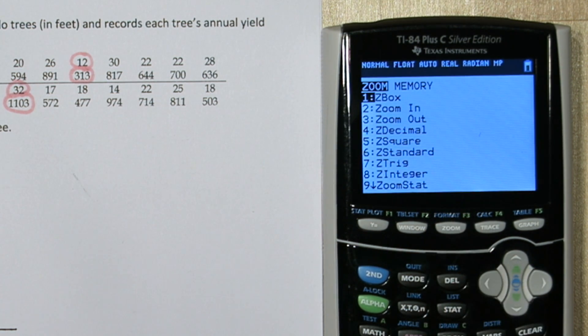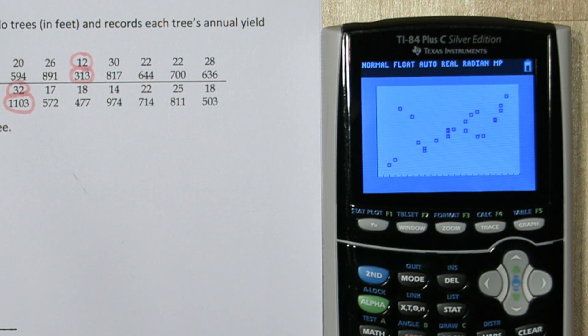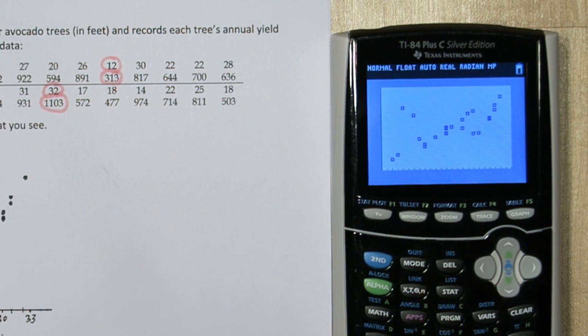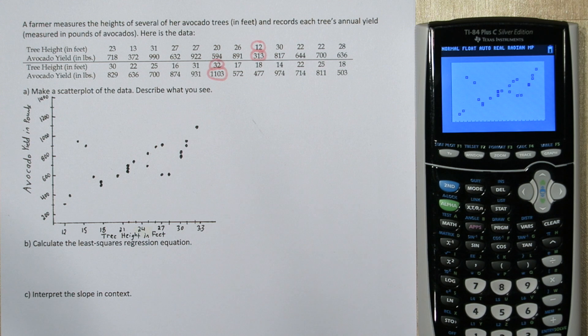Now if you press ZOOM and 9, here's our scatter plot. So if we compare the two of them, they look pretty similar. Now if you have to copy down a scatter plot, I still suggest typing it into the calculator first, and then just transferring over the points. It's much easier than plotting the actual coordinates.